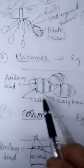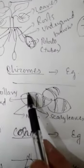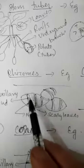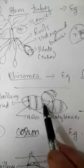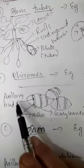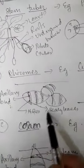The second modification of underground stem is the rhizome, with ginger as its example. Ginger, known as adrak, is commonly found at home. The line-like structures on ginger are actually its nodes. It is an underground stem with scaly leaves over the nodes, and in the axil of each scaly leaf there is an axillary bud. These three features — nodes, scaly leaves, and axillary buds — are the identification markers of a stem, whether underground or above ground.